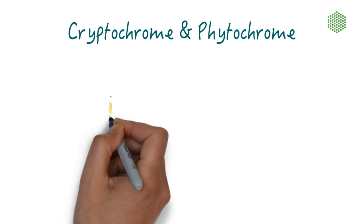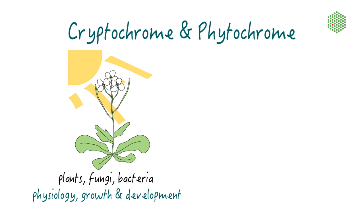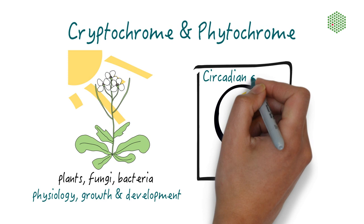Both cryptochromes and phytochromes were initially characterized in plants and cyanobacteria. In plants, they are essential for the photoperiodic control of flowering and play an important role in plant physiology, growth and development. Cryptochrome homologues were even shown to control the circadian rhythm in mammals.